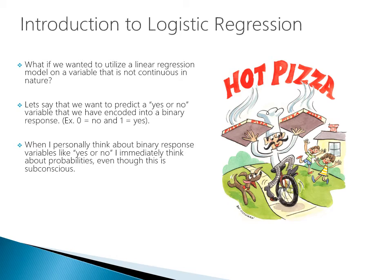When I personally think about binary response variables like yes or no, I immediately think about probabilities, even though this is subconscious. Years ago before getting into data science, I'd think about yes or no type scenarios but wouldn't be thinking about the probabilities associated with it. But now that I'm thinking in more of a statistical mindset, when you think about yes or no, it's really just a spectrum of probabilities.